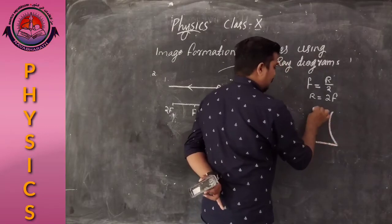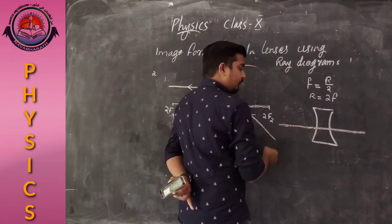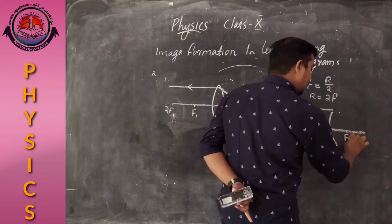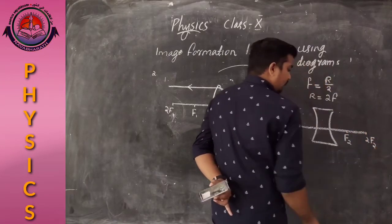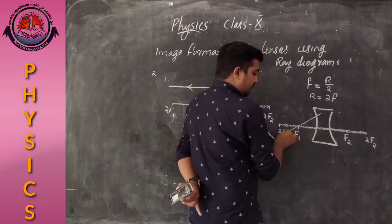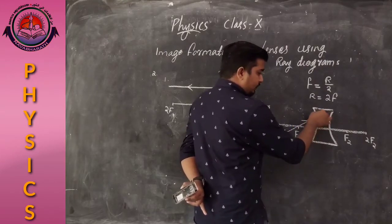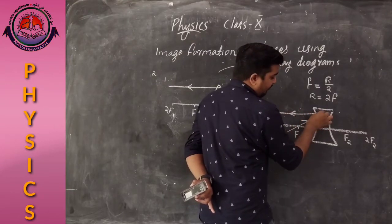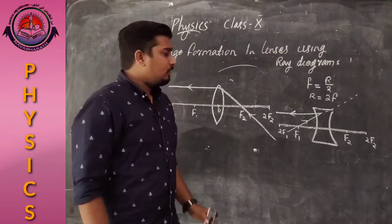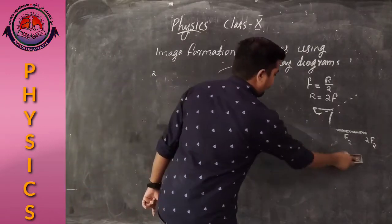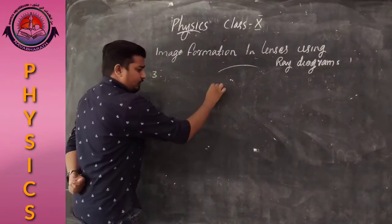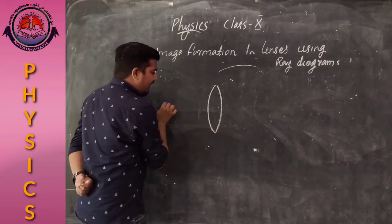In the case of a concave lens: with 2F1, F1, F2, 2F2, a ray passing toward F1 after refraction travels parallel to the principal axis. This is the second rule for a concave lens.